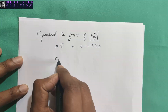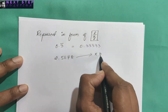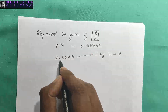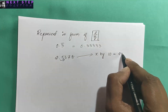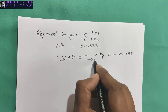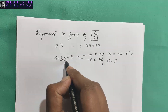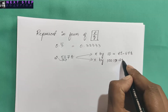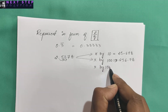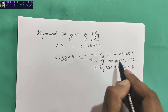For example, if we take 2.5678 and multiply by 10 it becomes 25.678. If we multiply by 100 the point moves two digits to the right and it becomes 256.78. Similarly, multiplying by 1000 gives 2567.8. These are basics from your previous class.